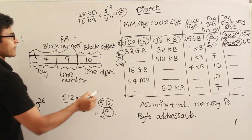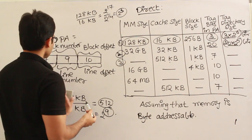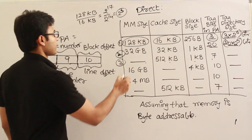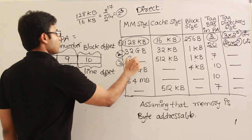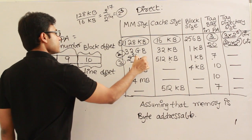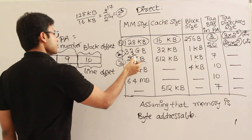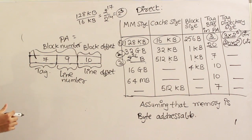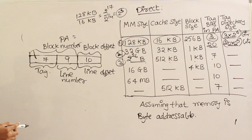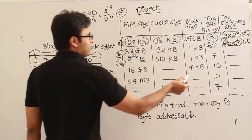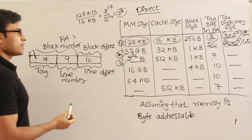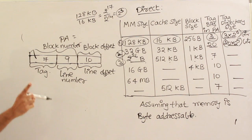So the answer is 2^26 bytes, which is 256 MB. Without doing all that, you can find it directly: since there are 7 tag bits, 2^7 blocks of main memory map to one cache line.